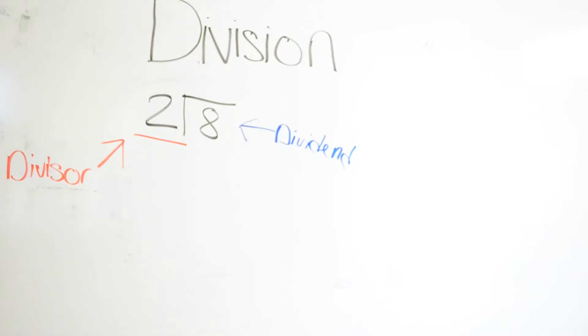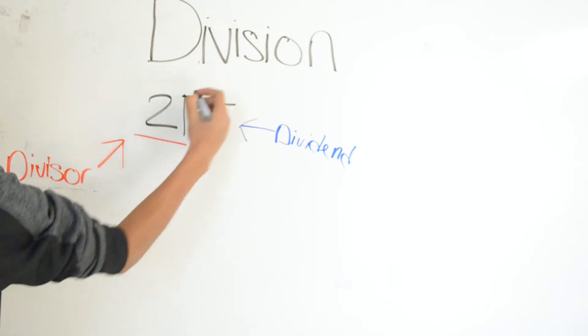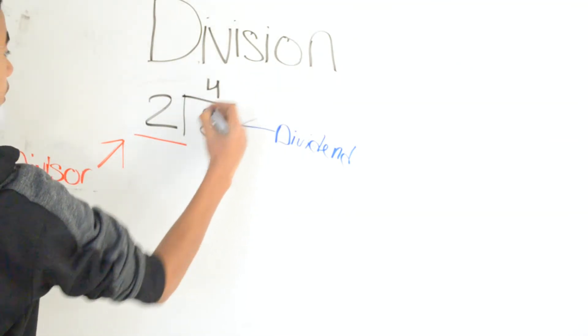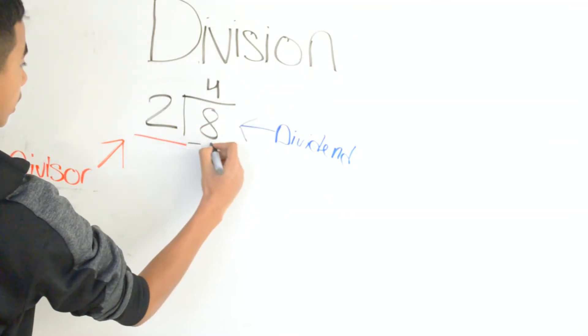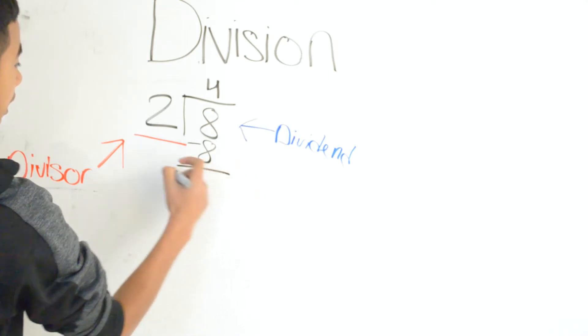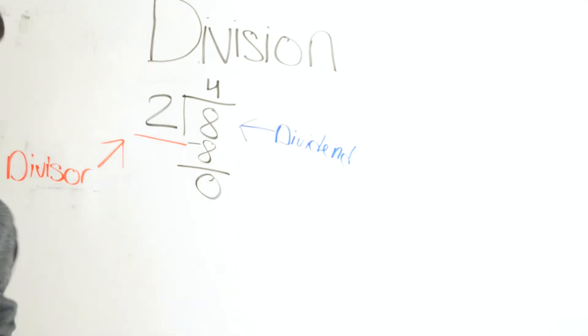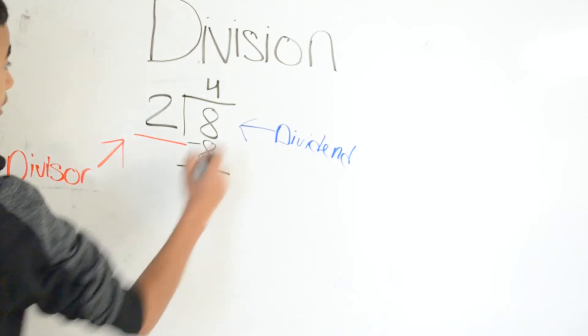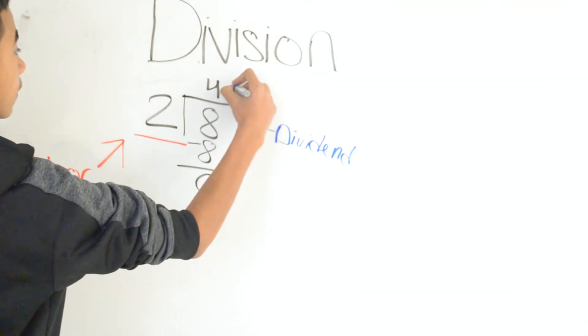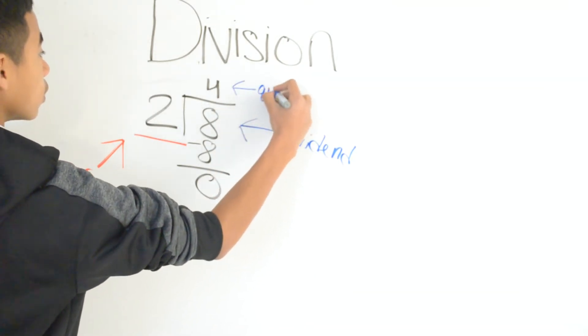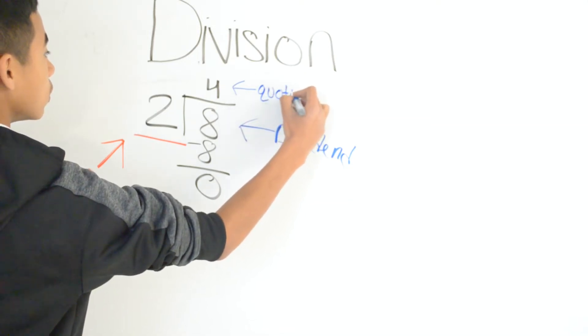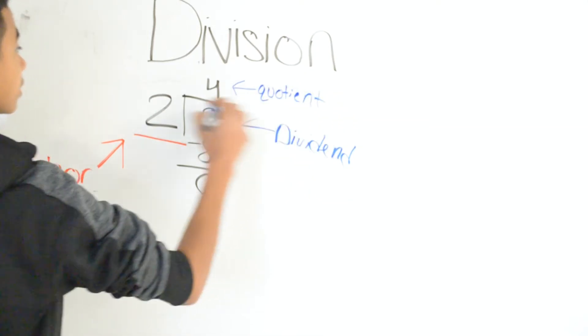So now we get into the problem. 2 goes into 8 how many times? 2 times 4 is 8, so 2 goes into 8 four times. 8 minus 8 is 0. So our quotient is 4, and that's our final answer.